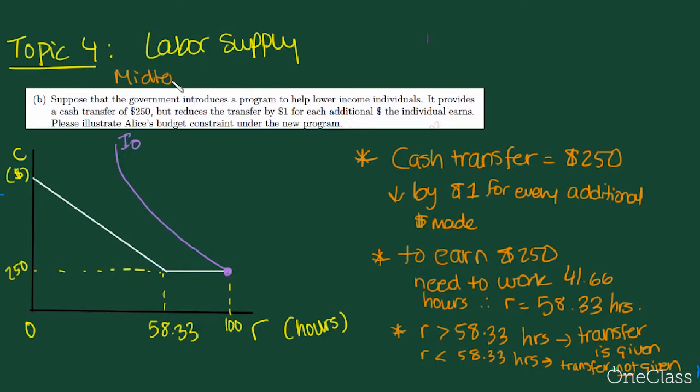So this is again from the same midterm, midterm one of 2011, the second part of the question, question 3B. Suppose that the government introduces a program to help lower income individuals. It provides a cash transfer of $250, but reduces the transfer by $1 for each additional dollar the individual earns. This statement right here means that the marginal rate of taxation is equal to 100%. Because for every additional dollar you make, the government takes $1 away from that transfer. So please illustrate Alice's budget constraint under the new program.